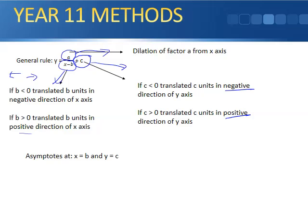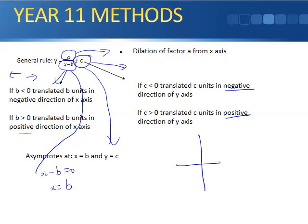The asymptotes occur when the denominator equals 0, giving x = b, and the horizontal asymptote is at y = c. These asymptotes shift the normal graph. If the value of 'a' is positive, the graph sits in those two quadrants; if it's negative, it sits in the other two quadrants.